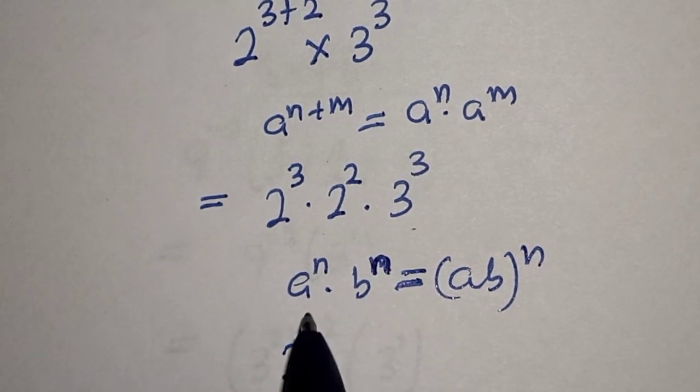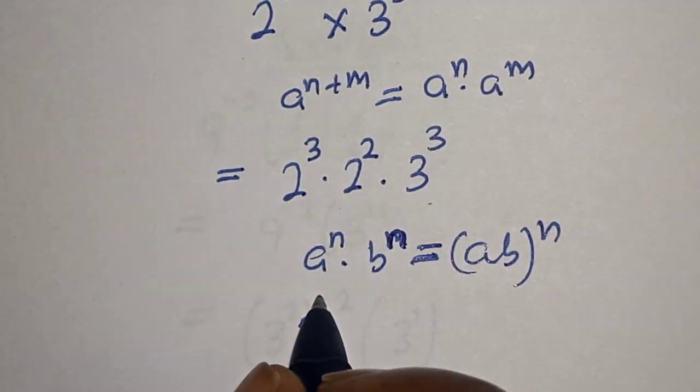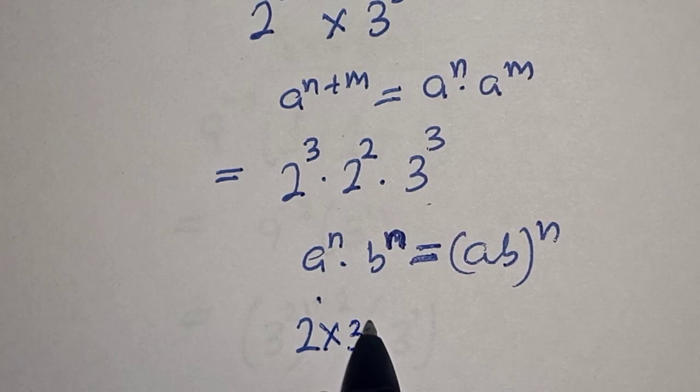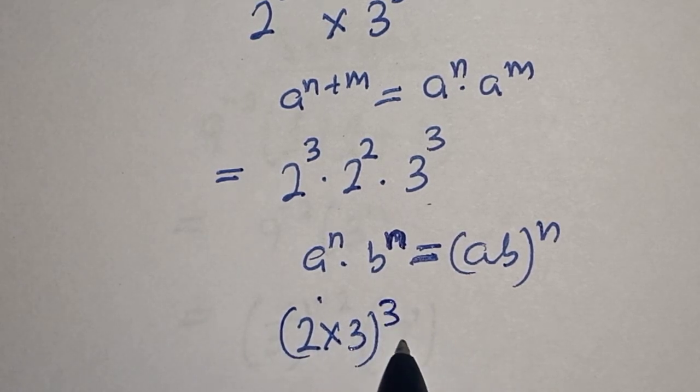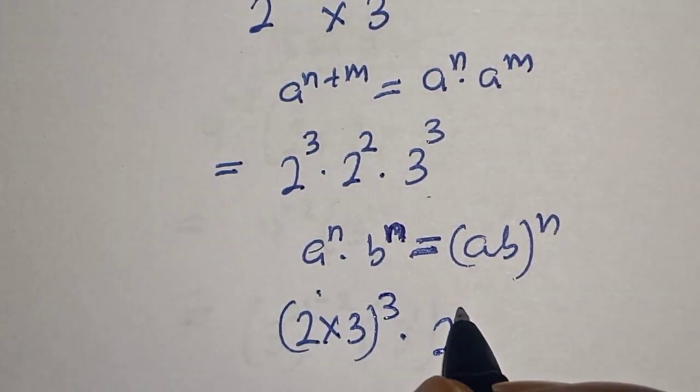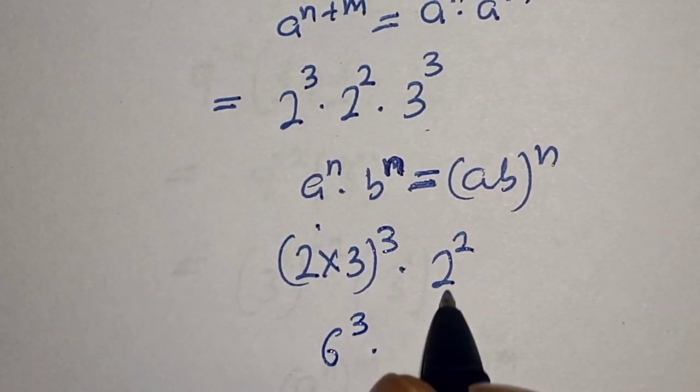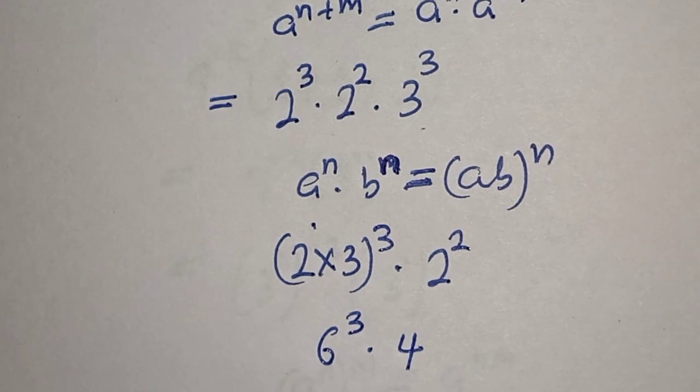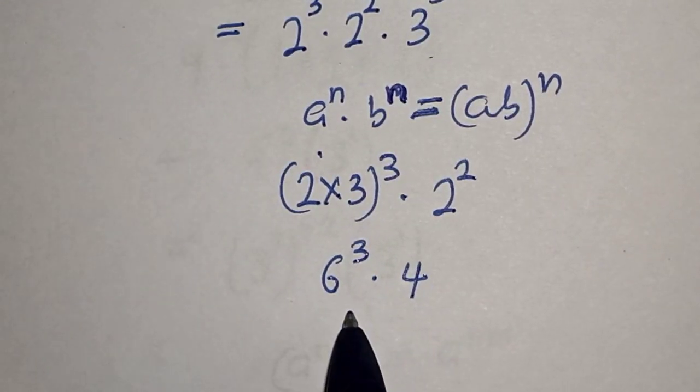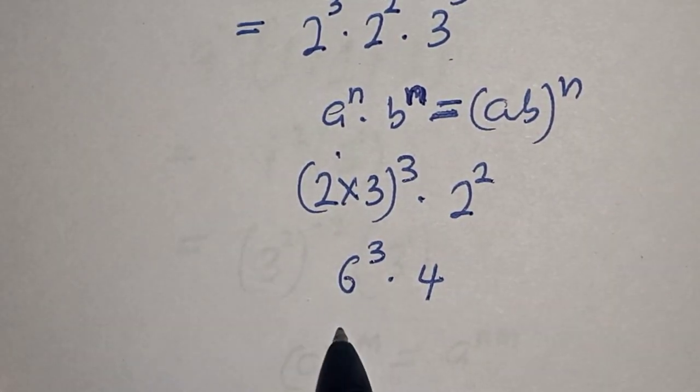And this is 2 times 3, which is 6 raised to power 3 multiplied by 2 square is 4. Then 6 raised to power 3 is 216 multiplied by 4.